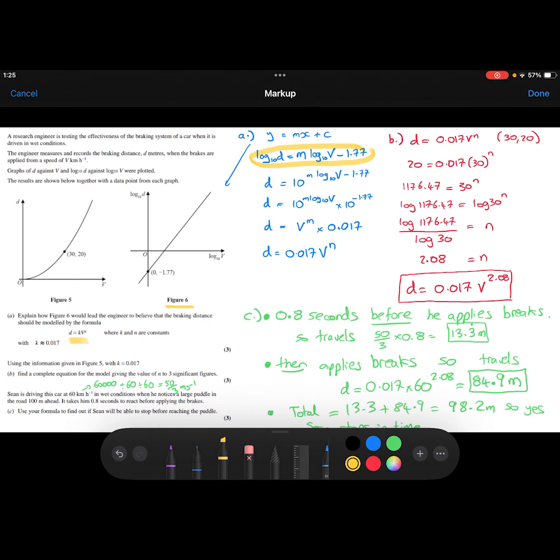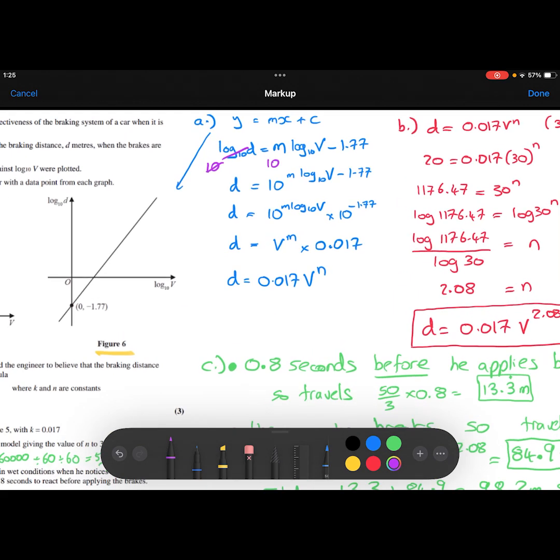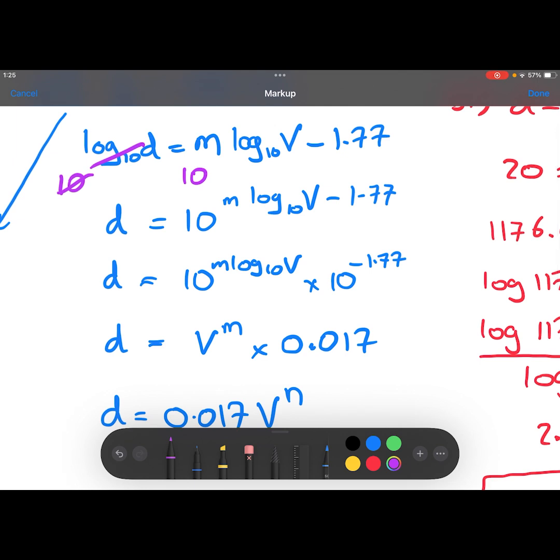Now I'm going to remove that logarithm because I want to have D as the subject. The way I'm going to remove that logarithm is I'm going to do 10 to the power on both sides. That way I've got D equals 10 to the power of m log base 10 of V minus 1.77. It's important to note that all of this is in the power.